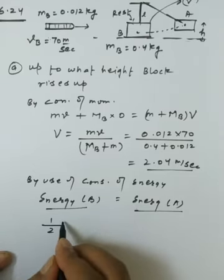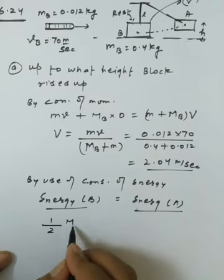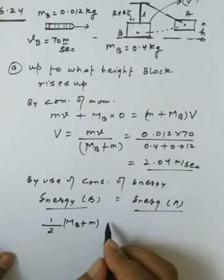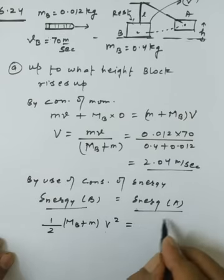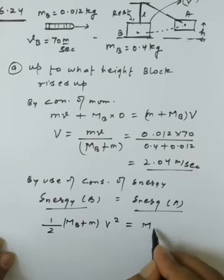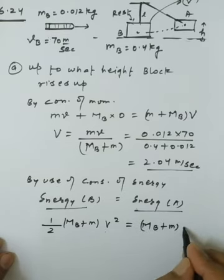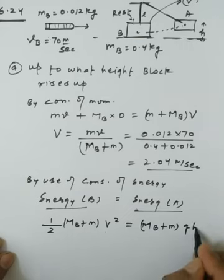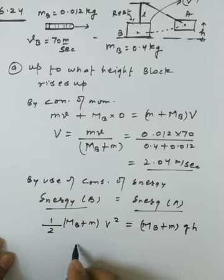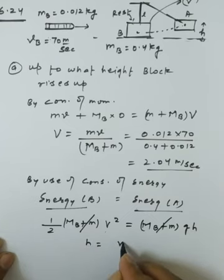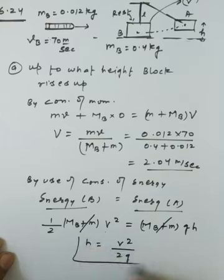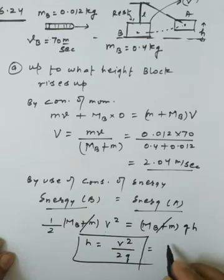Energy at point B = Energy at point A: (1/2)(M + m)V² = (M + m)gH. The masses cancel, giving H = V² / (2g). Substituting all values with g = 9.8 m/s².